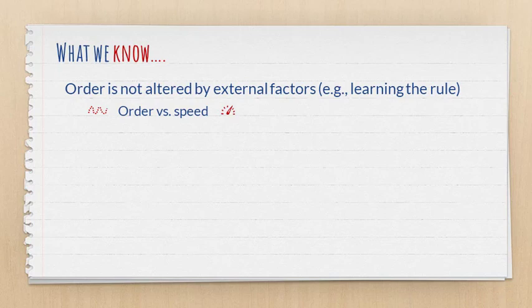Now I said order — I didn't say speed. So could feedback, for example, or focus on form help learners move faster through the stages? Well, that depends on who you ask. This goes back to the issue of implicit versus explicit knowledge and whether there is any kind of connection or interface between them.